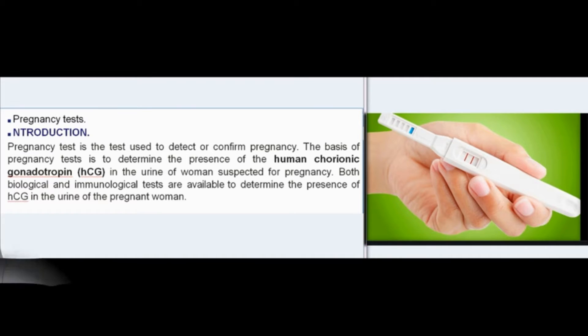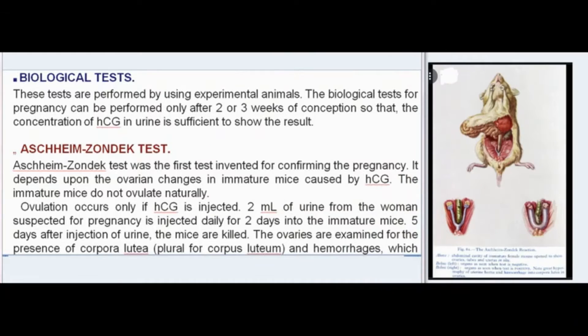Biological tests are performed by using experimental animals. These tests can be performed only after two or three weeks of conception, so that the concentration of HCG in urine is sufficient to show the result.